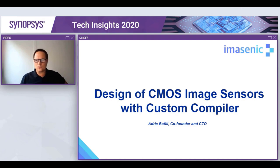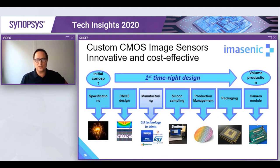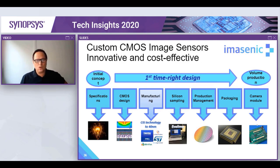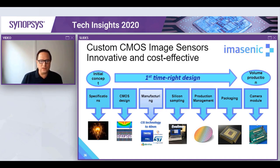We'll go now to the next slide where we show the activities that we do at iMascenic. We always start from the specifications of our customers — sometimes they are very detailed, other times just a few lines — and we help the customer fit the specifications to the technology capabilities of different CMOS image sensor foundries. The core of our activities is in CMOS design, and our engineering team tries to always meet or exceed the requirements of our customers. This is the activity where we use Synopsys tools.